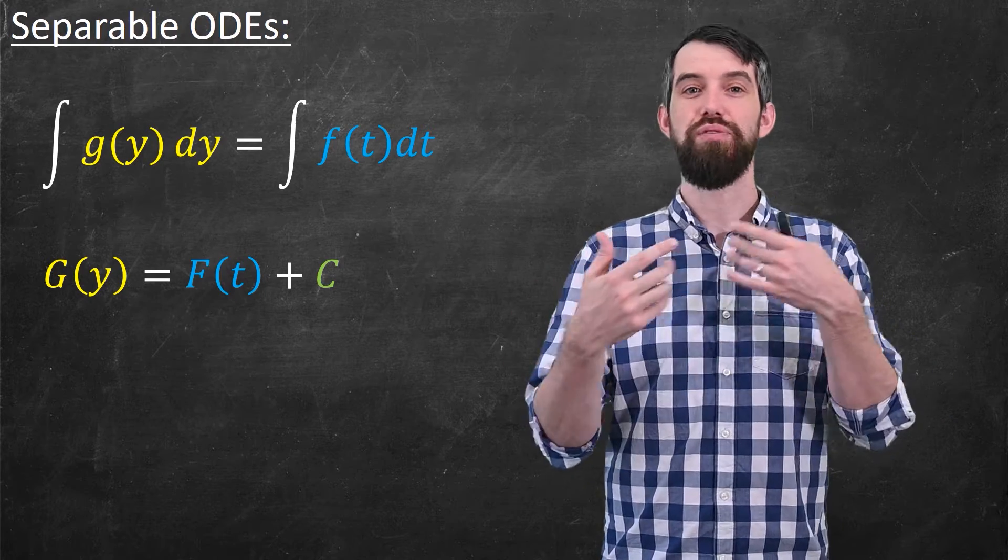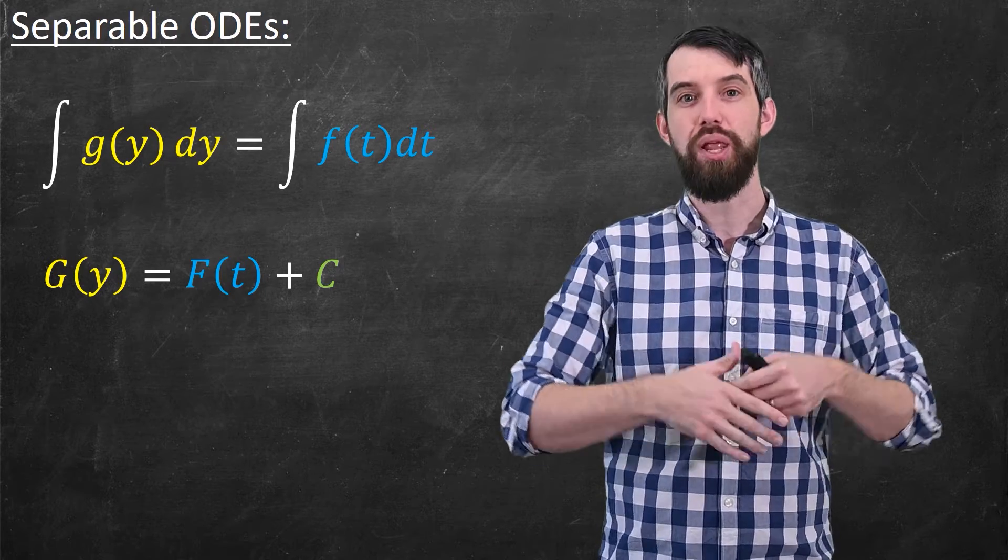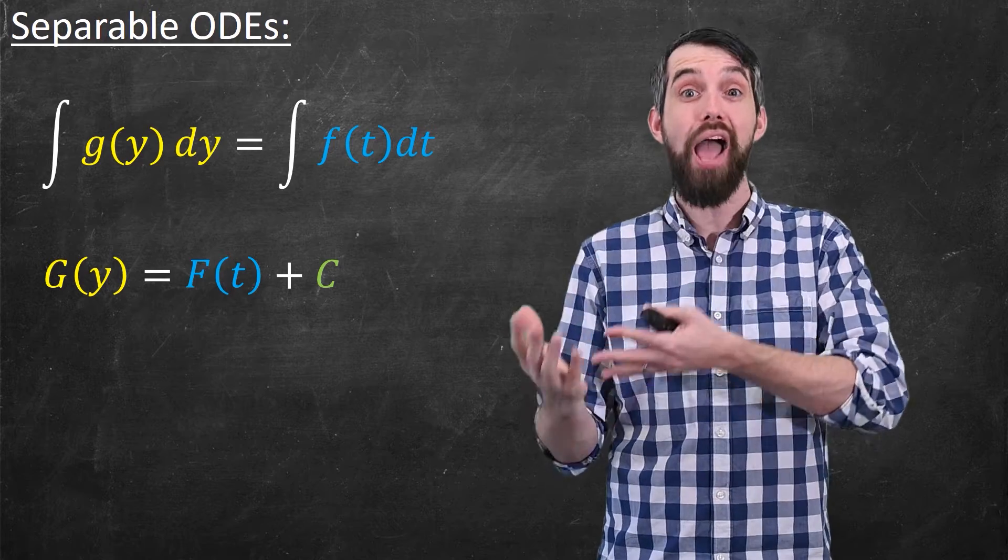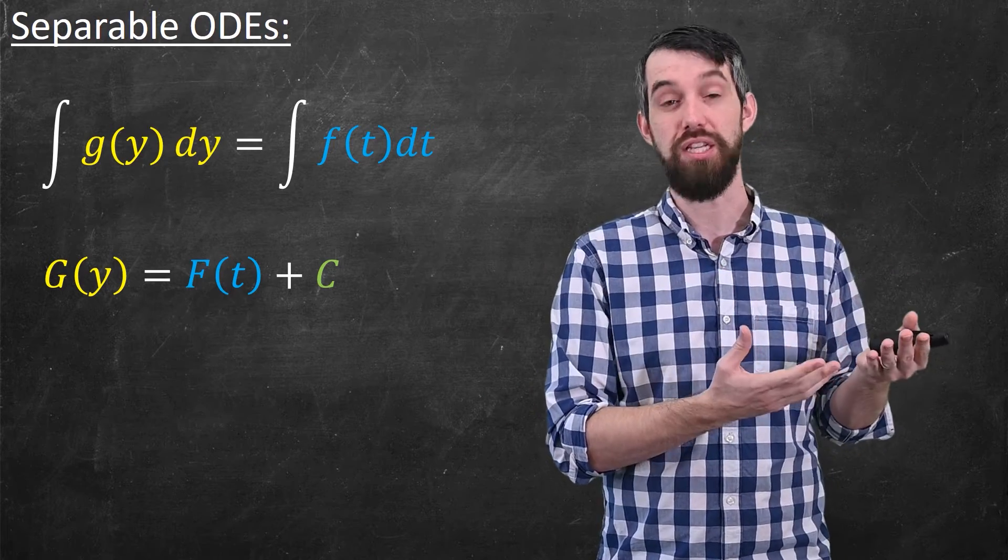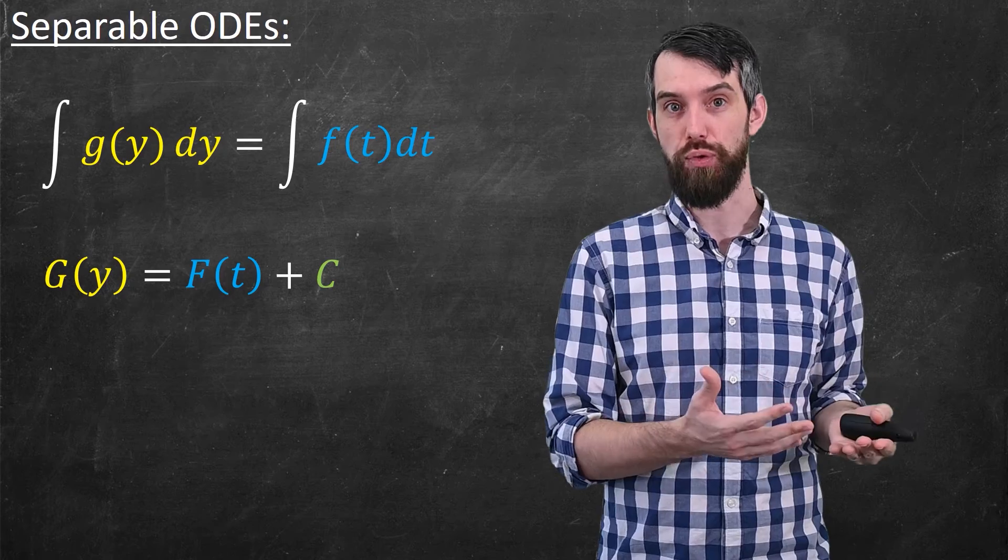This equation that I have down here is my solution to the original differential equation, the original separable differential equation. Sometimes the g of y is relatively nice, as it was in our first example, and I can solve it explicitly to say that y is this specific function of t, and sometimes the g of y is quite messy, and I'm not able to do that.